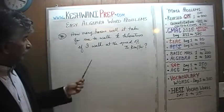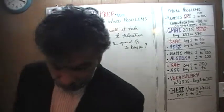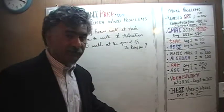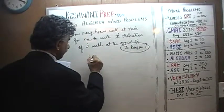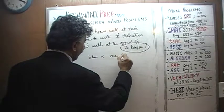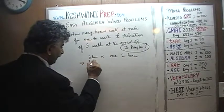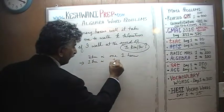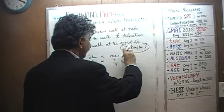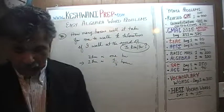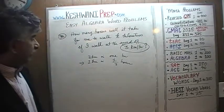I walk at the speed of 3 kilometers per hour and I want to walk K kilometers — how many hours will it take? So we know my speed is 3 kilometers in one hour. That implies I can walk one kilometer in a third of an hour, because I walk 3 kilometers in one hour, therefore one kilometer takes a third of an hour.